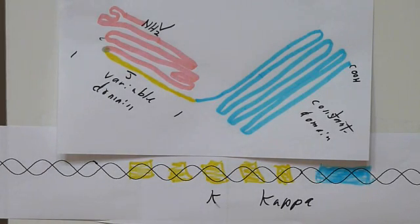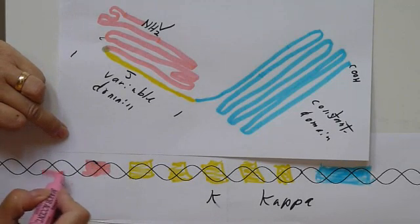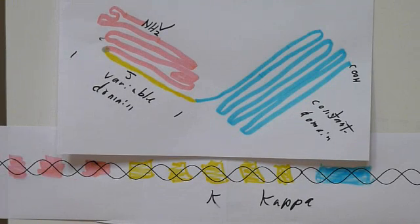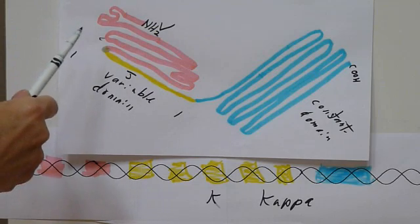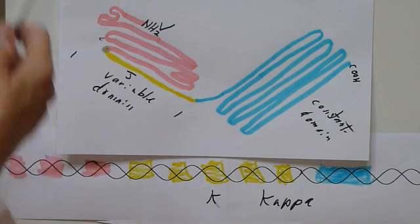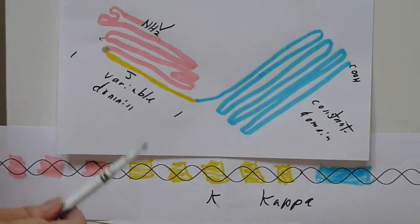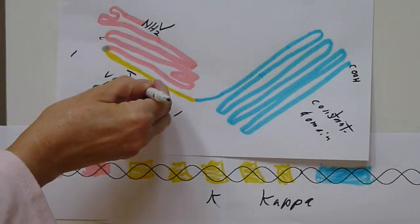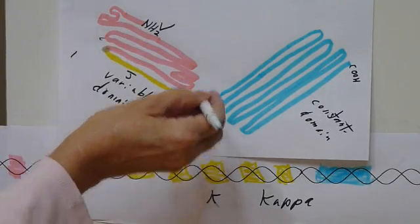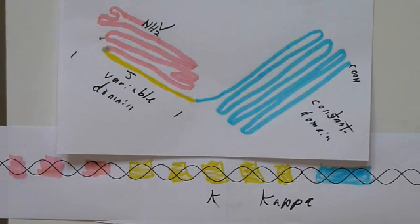And it also has, as it turns out, 35 regions that code for the variable region. The way we get the variability in this recognition region so that we have all of these different kinds of antigens that we can identify using our antibodies is that we have 35 different options, different things we can put here. We have five different options of DNA sequences that we can put to code for this part. And when we mix and match them, you've got combinatorial, mathematical, huge numbers of different combinations of V and J.